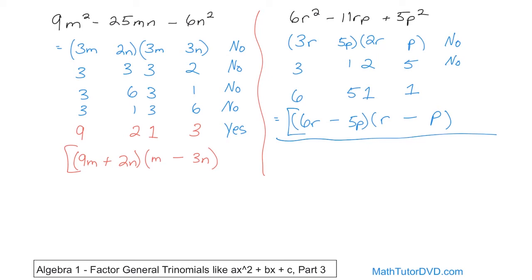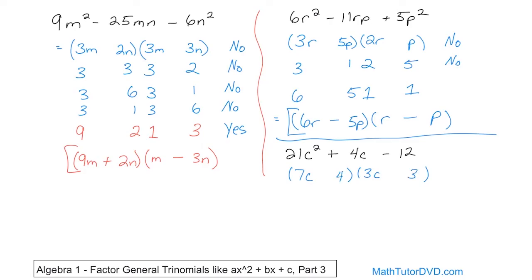Now the next problem — we only have two more of these. Let's say we have 21c squared plus 4c minus 12. This one's going to be cheeky because you have 21. So you have 1 times 21 and also 7 times 3 is 21. And for 12, you have 1 times 12, 2 times 6, and 3 times 4 — lots of combinations. You're trying to get the interior answer to be 4. First, always start out with the parentheses: 7 times 3 is 21, so I'll put 7c times 3c. Then I look at 12 — I'll put 4 and 3 to give me 12.